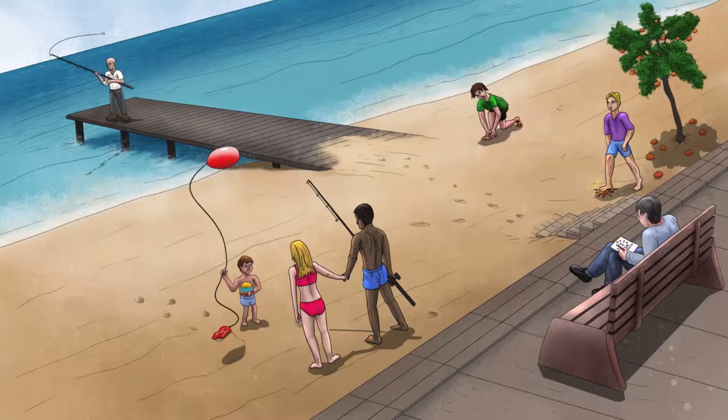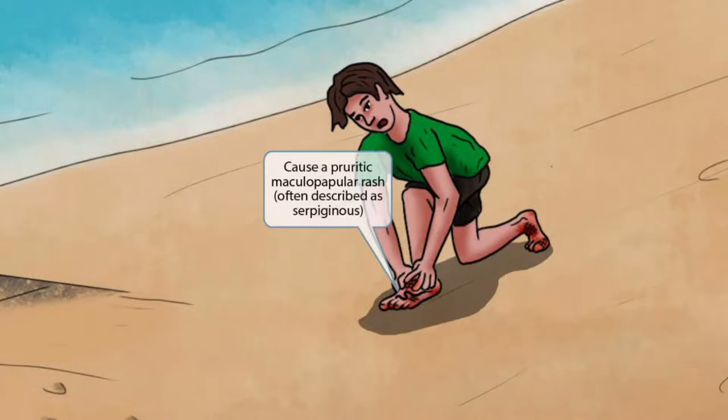Now we've added another guy on the beach who's hunched over. He was walking on the beach barefooted when he scraped up his feet pretty badly. Now you can see that he's scratching his foot, and if you look closely, you can see that he has a tattoo of a snake on it. The fact that he's itching the area around this snake tattoo should help you remember that Ancylostoma and Necator cause a pruritic maculopapular rash, which is often described as serpiginous.